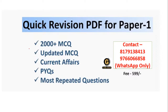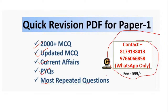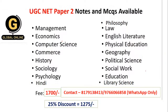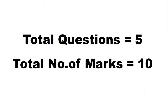For students appearing for the examination right now, we have a quick revision PDF for Paper One consisting of 2000+ updated MCQs, current affairs, previous year question papers, and most repeated questions. You can get in touch via the WhatsApp number given; the fee is ₹599. For Paper Two, notes and MCQs are available for listed subjects at ₹1700, with a 25% discount bringing it to ₹1275.